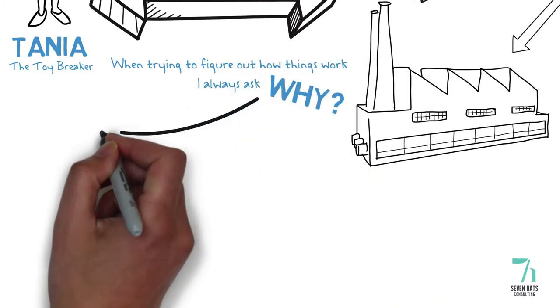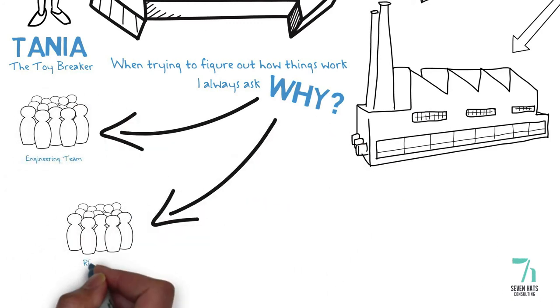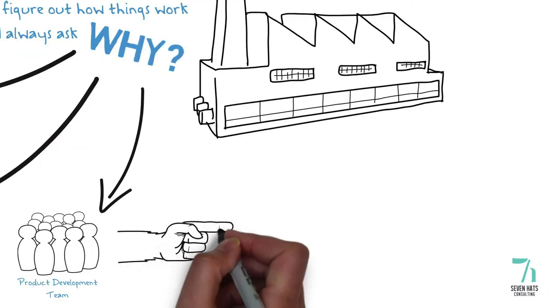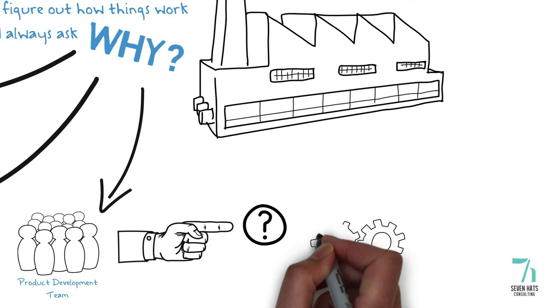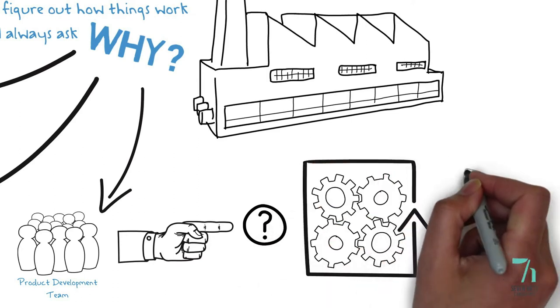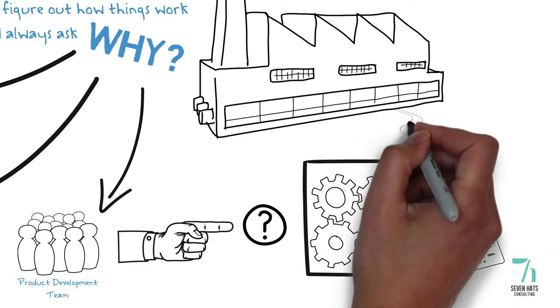When you're trying to figure out how things work I always ask questions why. Those questions are to the engineering teams or to the R&D teams or the product development team. Why does this happen? How can we make this function better? How can we make this technology work for the market and really utilize it as an application?